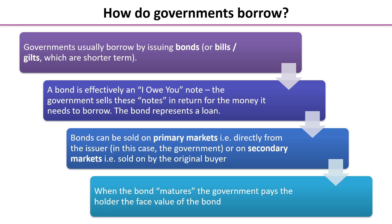When the bond actually matures and reaches its final date, the government pays the holder the face value of the bond. It's a little bit like that children's game when the music stops — whoever is the owner of the bond at that time gets the face value of the bond back.